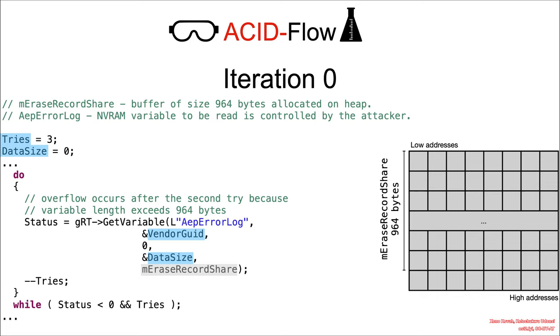On this first iteration, if the attacker controls this variable, which they do, it's going to say data size is zero, which is not enough buffer size to copy this variable out of the attacker-controlled NVRAM.